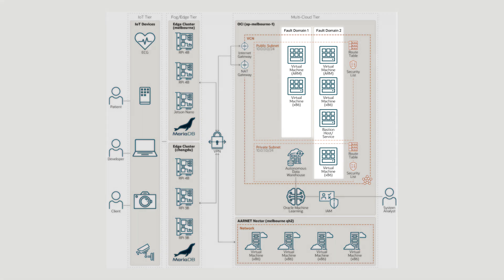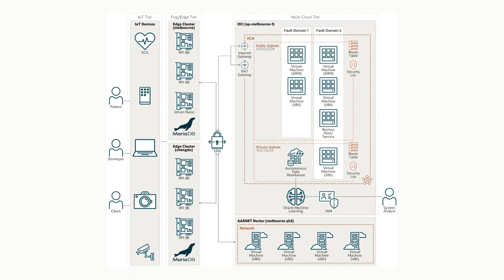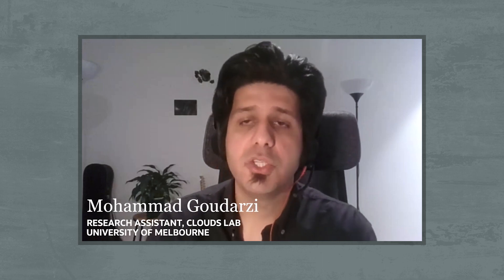You have two different fault domains. Is that for high availability, disaster recovery, or what's the reasoning for multiple fault domains? The reason that we use different fault domains is that we want to reach high availability. So in case any failure happens, for example, for one of the physical instances that we have in Oracle, the other instances on other fault domains can provide the same features that our framework offers.